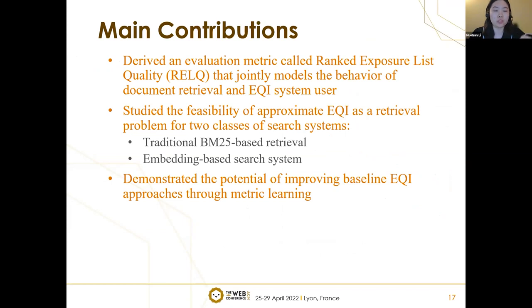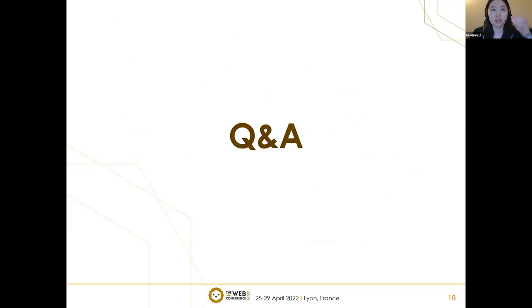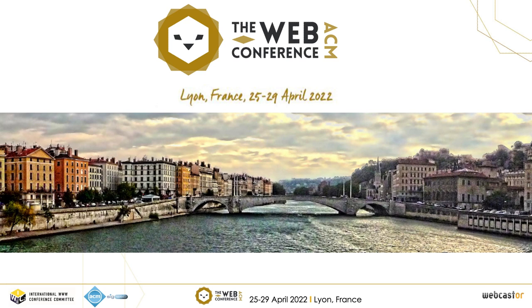The main contributions of this paper are: we derived an evaluation metric, RELQ, that jointly models the behavior of the document retrieval and the exposing query identification system; we studied the feasibility of approximating EQI for two classes of search systems, including traditional and embedding-based; and we demonstrated the potential of improving baseline EQI approaches through metric learning for embedding-based search systems. That's all for my presentation today — welcome any questions. Thank you very much, Rohan, for your presentation.